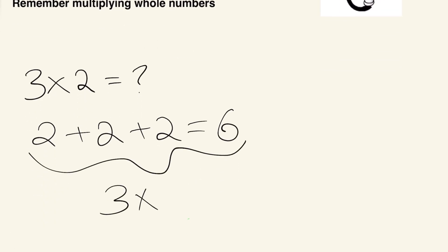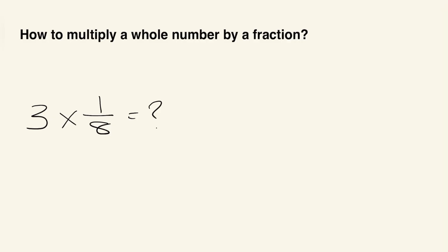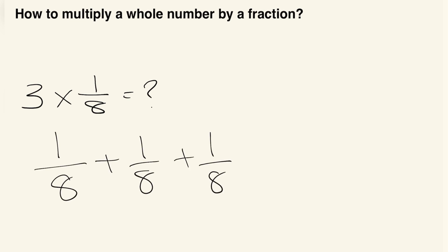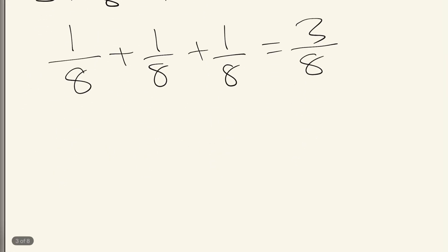This indicates that three times two is basically three groups of two, which gives you six. Something similar applies to fractions as well. So now we're going to learn how to multiply whole numbers by a fraction. It's basically the same concept — instead of three groups of two, we think of it as three groups of one eighth, so it's one eighth plus one eighth plus one eighth, which gives us three over eight.